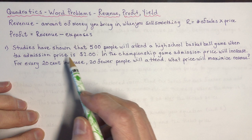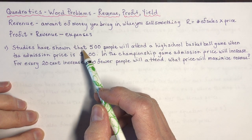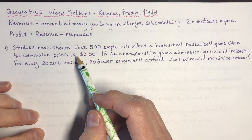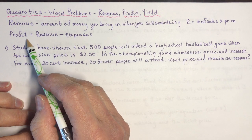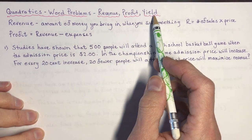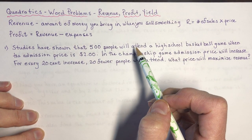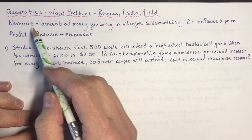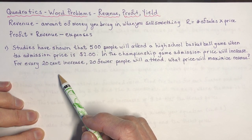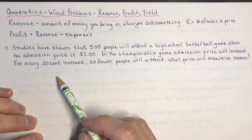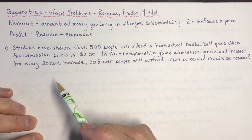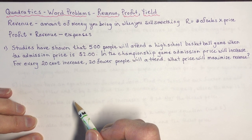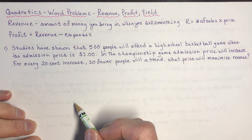Most of these word problems at the grade 10 level generally just ask for revenue, sometimes profit. Yield will be something you see maybe in grade 11. It's a type of word problem you're going to see over and over again, even into calculus. It's easy to understand — I'll make it very clear and I'm sure you'll be able to do any of these by the time you're finished.